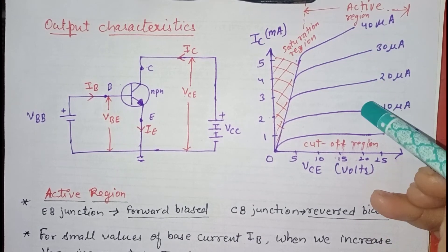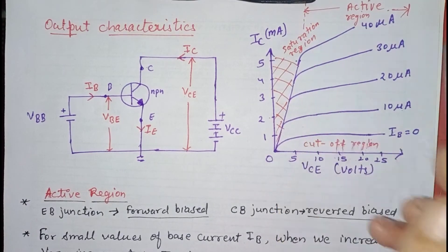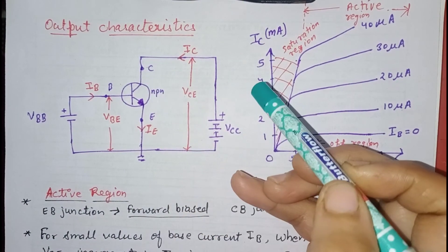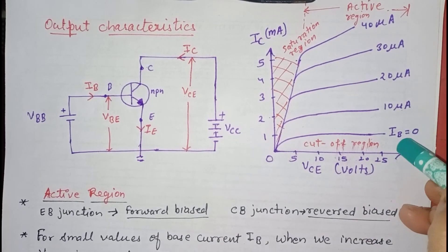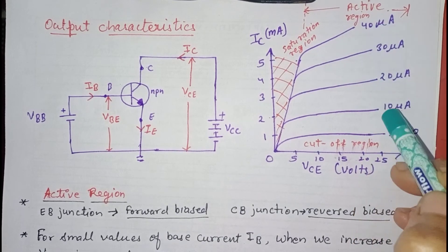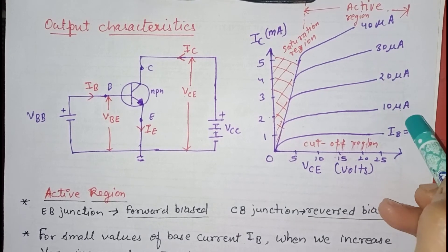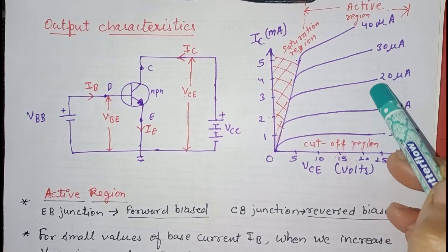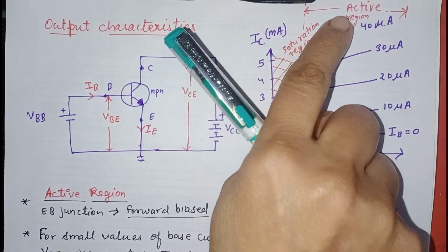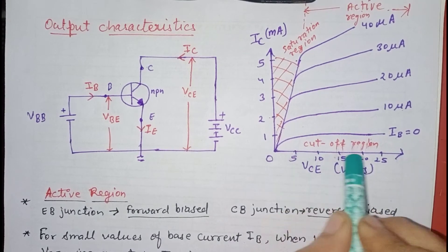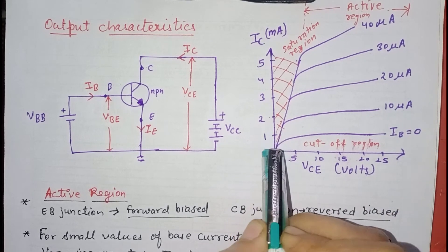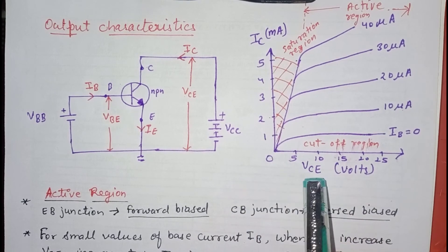In the active region, the base-emitter junction is forward biased and the collector-base junction is reverse biased. When we increase the fixed value of IB — 0, 10, 20, 30, and 40 microamperes — the curves move slightly upward. At lower values of IB, the curves are more parallel to the x-axis, showing very little increase in IC when VCE is increased.